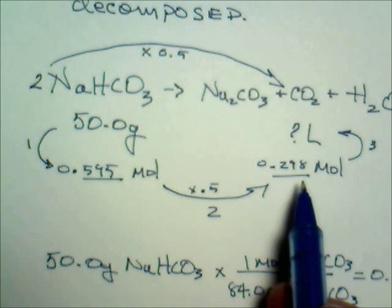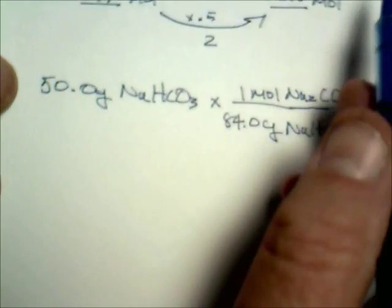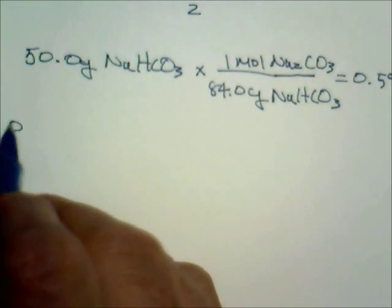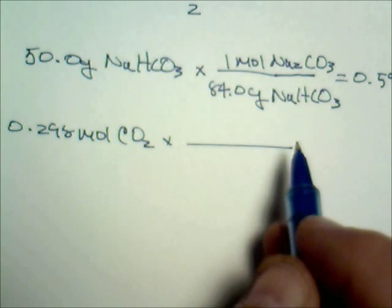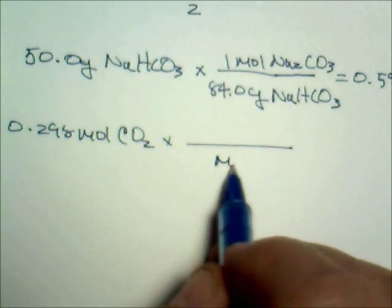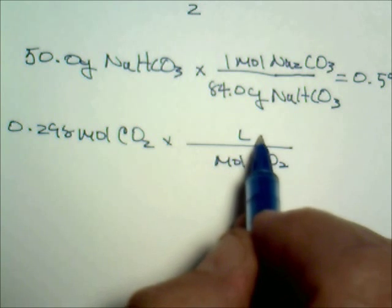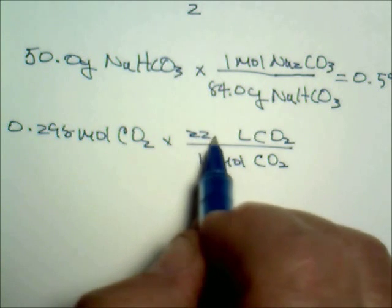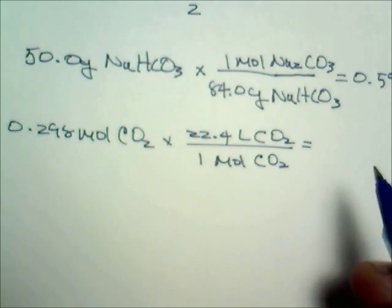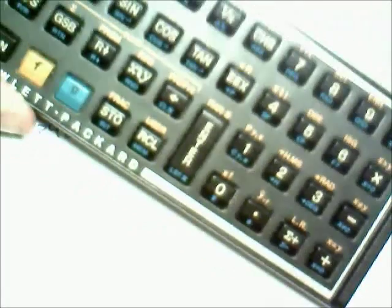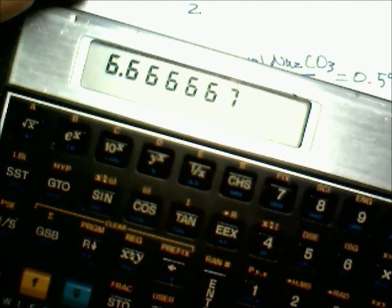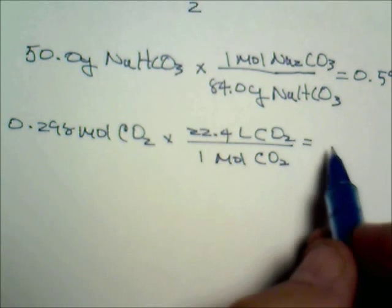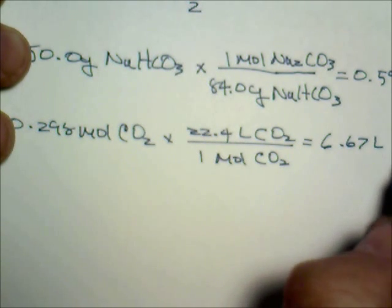Finally, we convert 0.298 moles of carbon dioxide to liters. At STP, one mole equals 22.4 liters, so we multiply 0.298 by 22.4. That gives us 6.67 liters of carbon dioxide — and that's our answer.